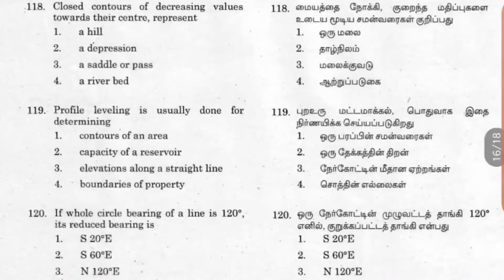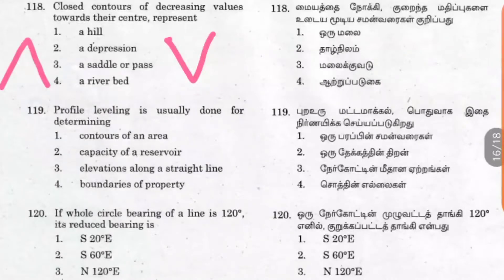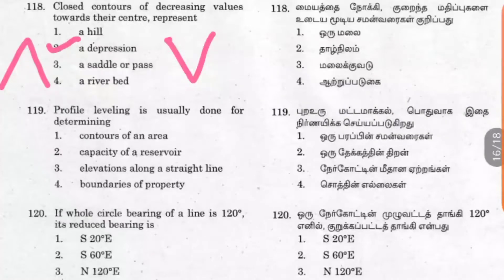Question 118: Closed contours with decreasing values towards their center represent a depression. If the values were increasing towards the center, it would represent a hill. Question 119: Profile leveling is usually done for determining elevations along a straight line. Option 2 is the right answer.